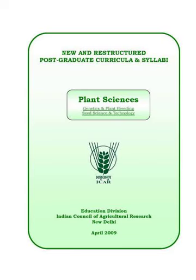Unit 2: Seed Production. Genetic purity concept and factors responsible for deterioration of varieties, maintenance breeding, generation system of seed multiplication, seed production agencies public and private, compact area approach, seed village concept in seed production, seed replacement rate, seed multiplication ratio, seed renewal period, varietal replacement rate, seed production planning.